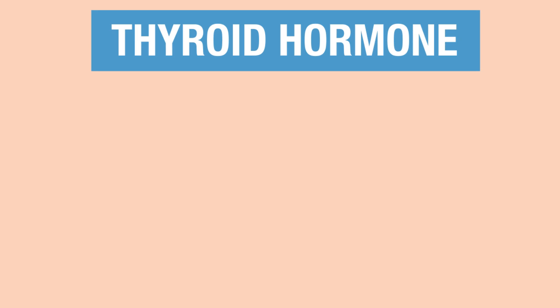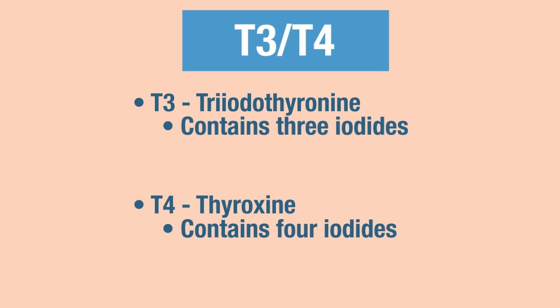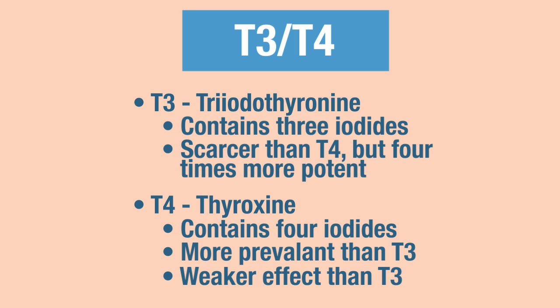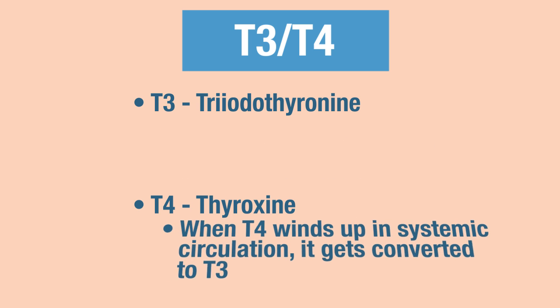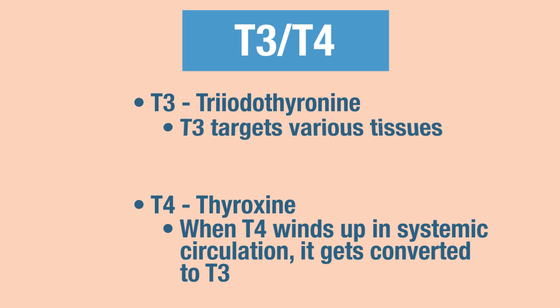There are actually two types of thyroid hormone: T3 and T4, both synthesized and secreted by the thyroid gland. T3 is called triiodothyronine because it contains three iodides. T4 is called thyroxine because it contains four iodide molecules. T4 is more prevalent than T3 but has a weaker effect. T3 is scarcer but four times more potent. Both T3 and T4 enter systemic circulation, and when T4 enters circulation, it gets converted to T3, which then targets various tissues.